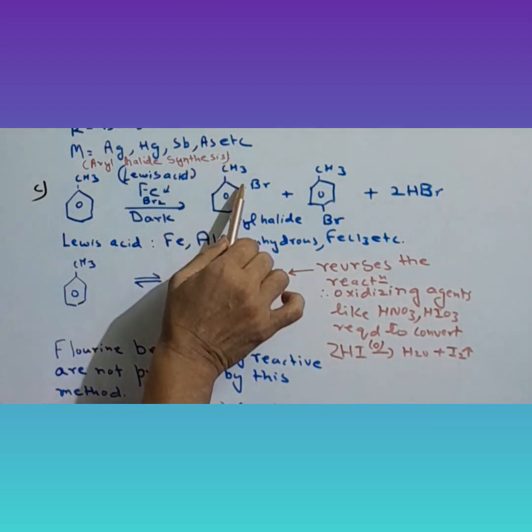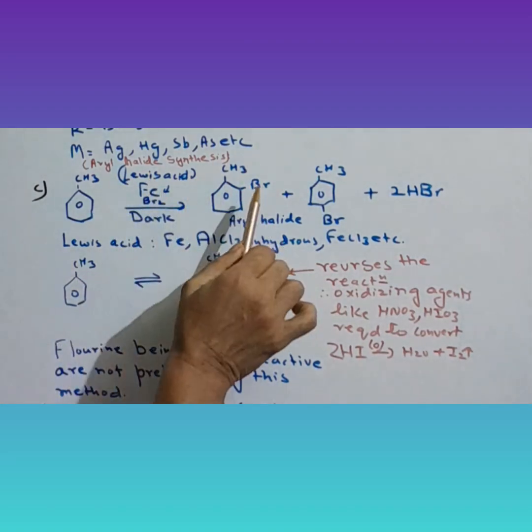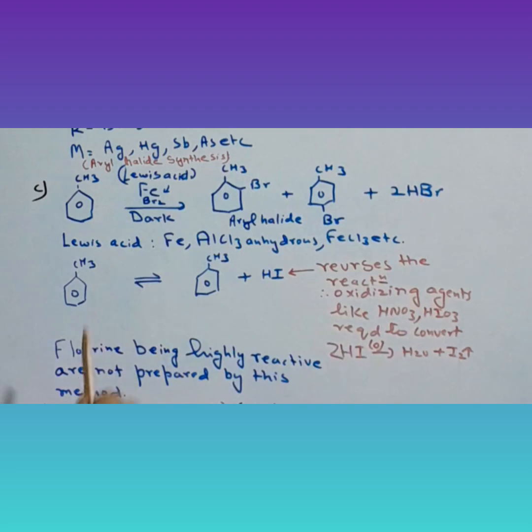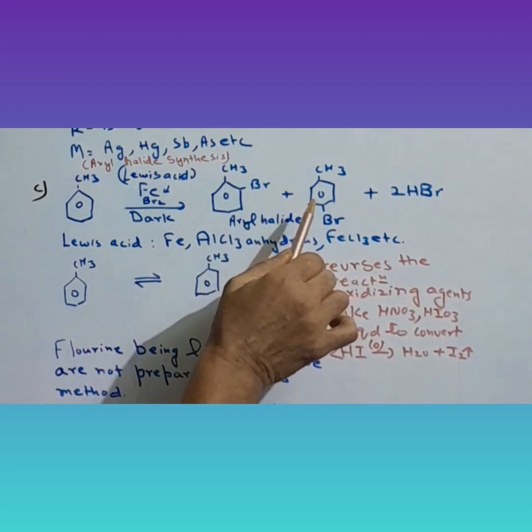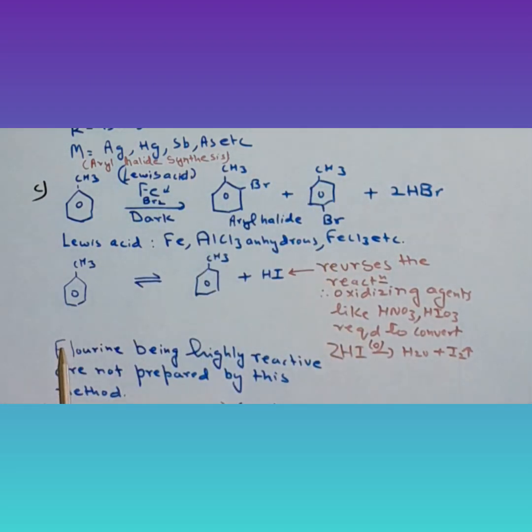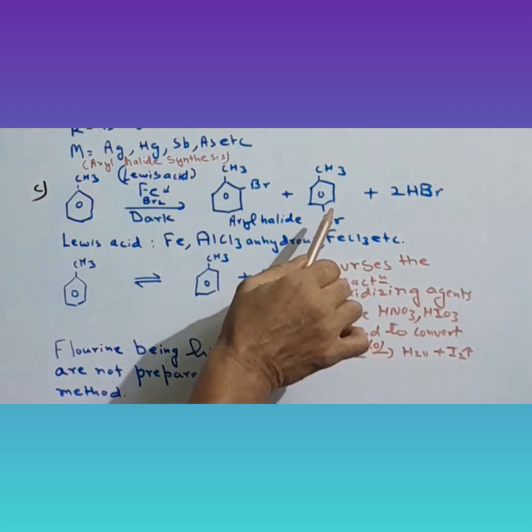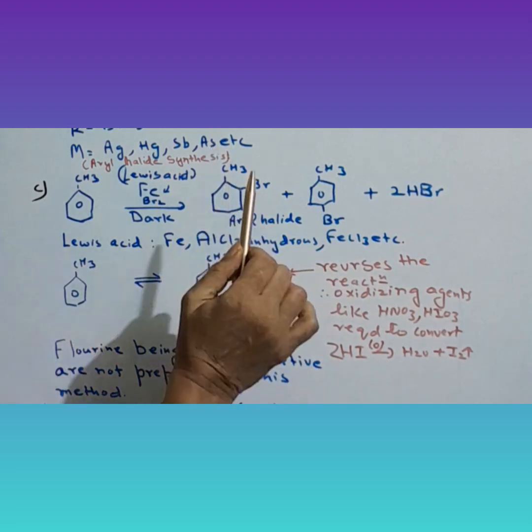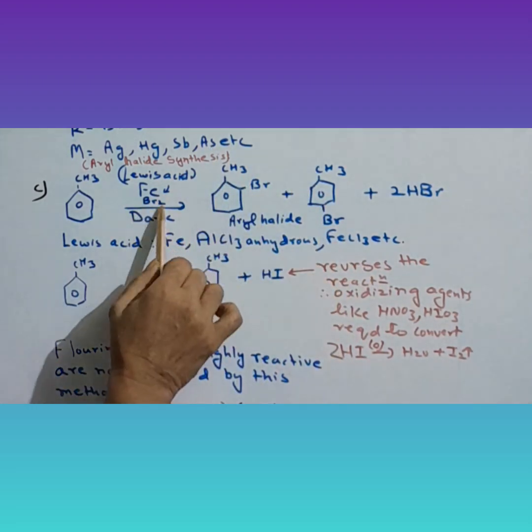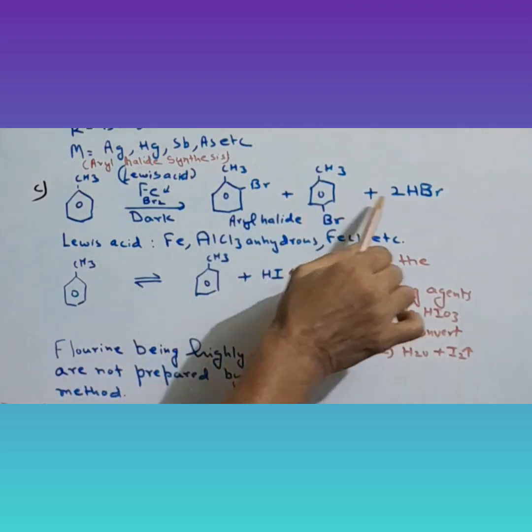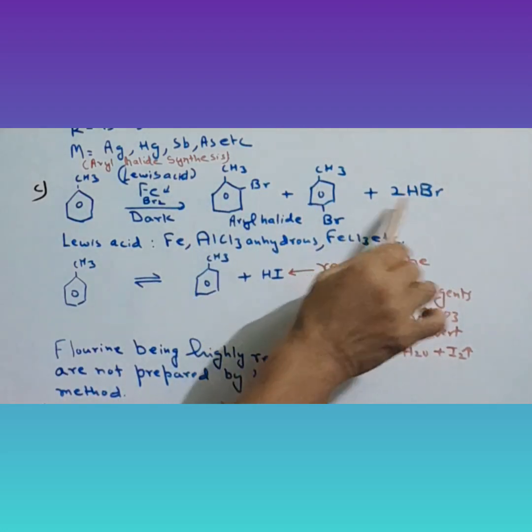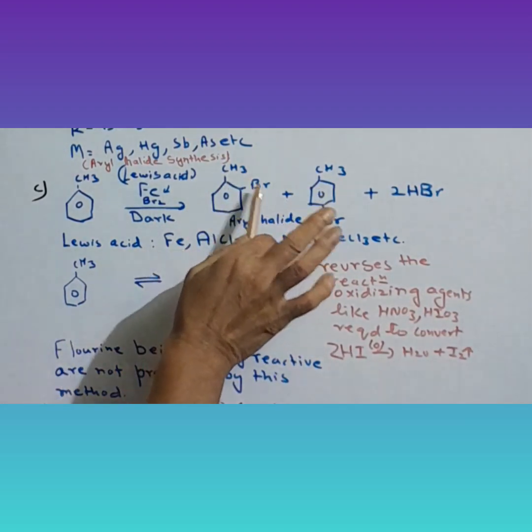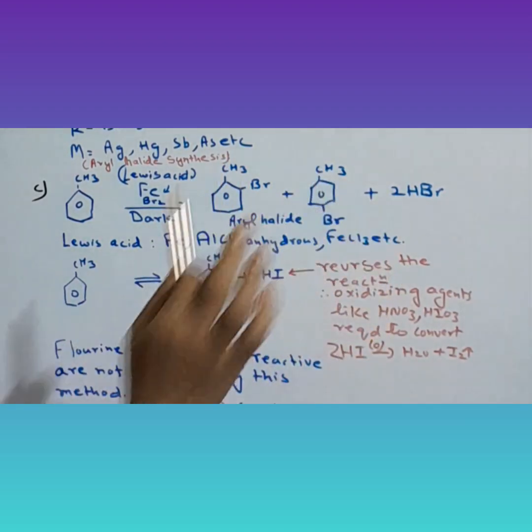One Br does electrophilic substitution, and the other Br reacts with H to form HBr. Similarly at the para position, Br⁺ does electrophilic substitution and Br⁻ combines with the replaced H to form HBr. From two positions, one H from each, and from Br₂, we get 2HBr as byproduct. The products are orthobromotoluene and parabromotoluene.